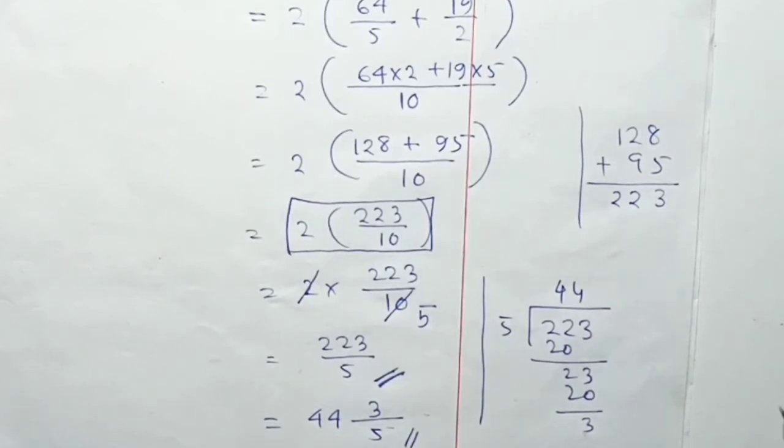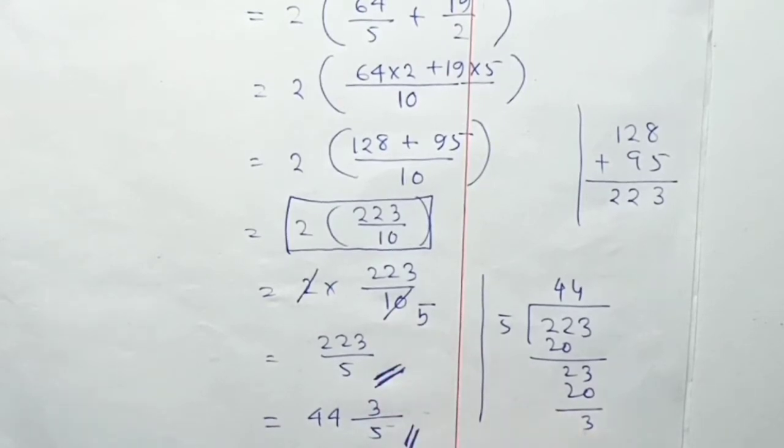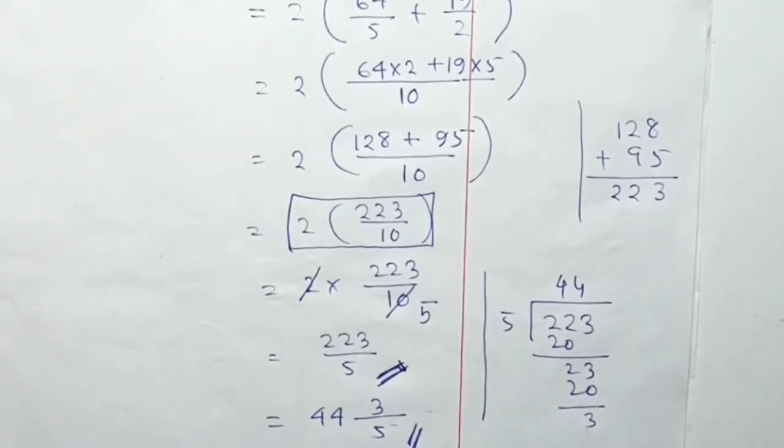Converting to mixed number: 446/10 = 44 and 6/10 = 44 and 3/5 meters is the perimeter.